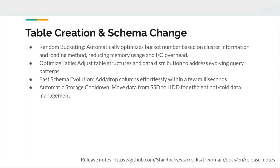Random bucketing is an easier way — before, you had to basically tell us what bucketing you want to do. This allows you to make it much more automatic. We also have an optimized table feature that allows us to do some performance enhancements in the way we do querying. Fast schema evolution for the table structure. And we also have this new capability of automatic storage cooldown.